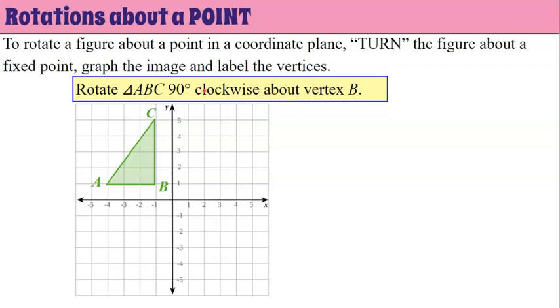We have our center of rotation which is going to be vertex B, our direction is going to be clockwise, and we're going 90 degrees as our angle of rotation so that's one turn in the coordinate plane.